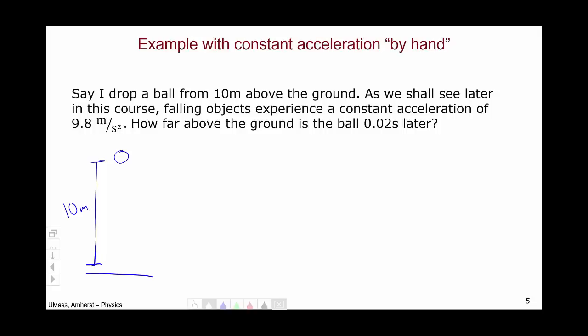As we'll see later in the course, a falling object undergoes a constant acceleration of 9.8 meters per second squared. We'll discuss this in more detail later. We'll get into the physics of free fall at length. That's not the point of this. The point is to show you how to run the mechanics of the simulation in this very simple example of constant acceleration.